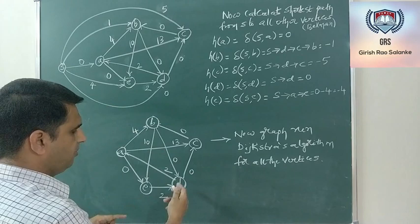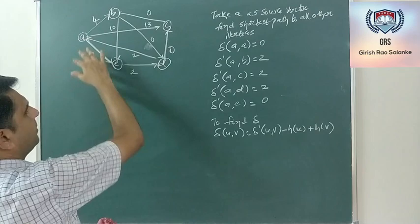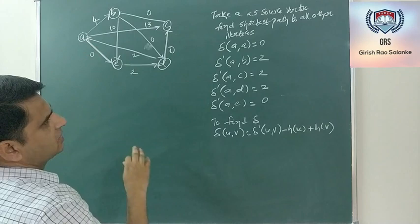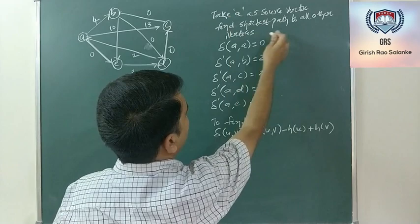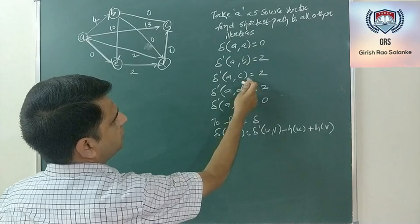The same reweighted graph is used. Take A as the source vertex and apply Dijkstra's algorithm to find the shortest path to all other vertices. This gives δ'(A, A) = 0, δ'(A, B) = 2, δ'(A, C) = 2, δ'(A, D) = 2, and δ'(A, E) = 0.